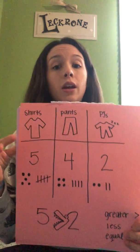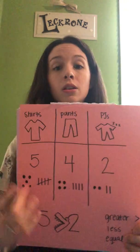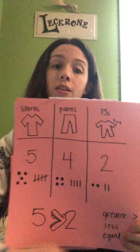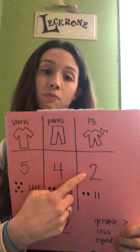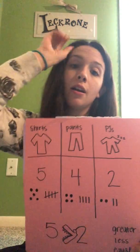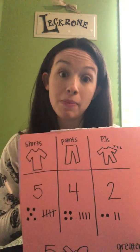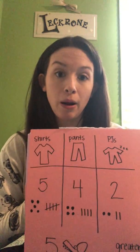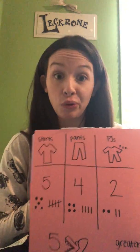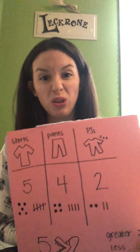She had five shirts, four pants, and two sets of pajamas. I chose to compare my biggest number, the largest group, to the smallest number, the smallest group.